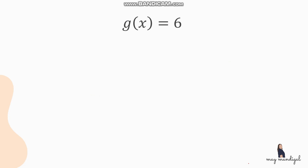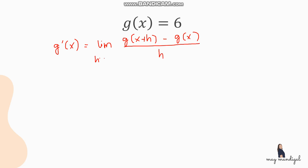Next, let's find the derivative of g of x equals 6. Using the limit definition: g prime of x equals the limit of g of x plus h minus g of x, all over h as h approaches 0. Here g of x equals 6, and for g of x plus h — since there is no variable x in the original function, it's just a constant — g of x plus h is also 6.